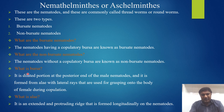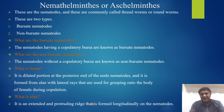What is the bursa? It is the dilated portion at the posterior end of the male nematode, formed from alae with little rays that are used for grasping onto the body of the female during copulation. What is alae? It is an extended and protruding ridge that is formed longitudinally on the nematode.